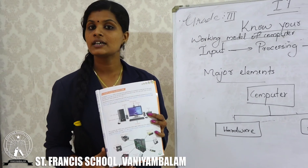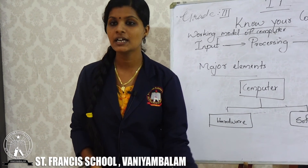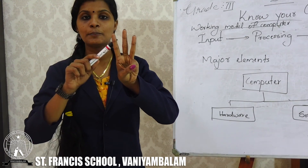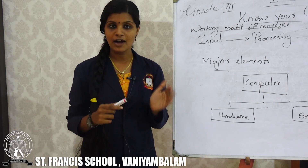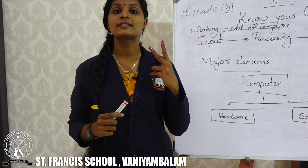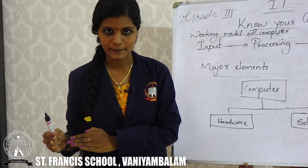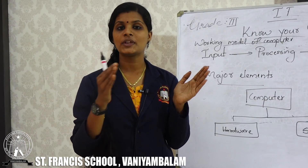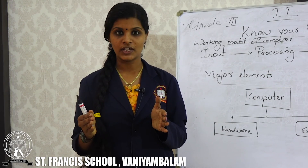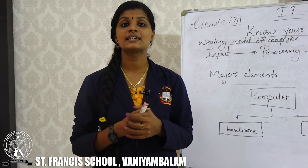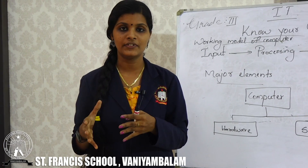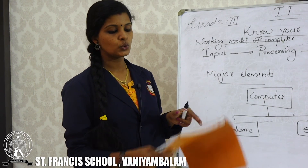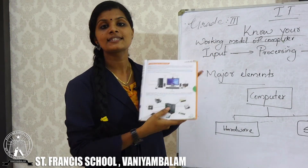Once again, we started our first chapter — Know Your Computer. First, we discussed the working model of a computer: three steps — Input, Processing and Output. Then we discussed two major elements of computer: Hardware and Software. Then we discussed what is hardware — the devices of the computer which we can see and touch. Read the textbook, write your notebook, and do the activity. Hope it is clear for you. Thank you.